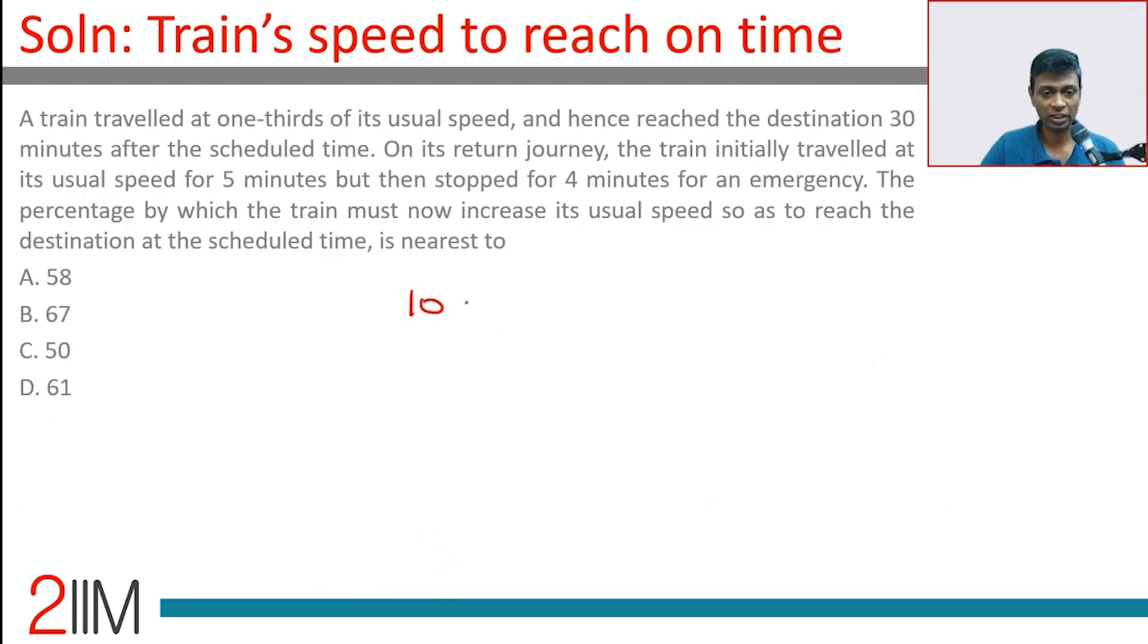So what it would have covered in 10, now it should cover in 6. The speed has to be x into 10 by 6 or x into 5 by 3.